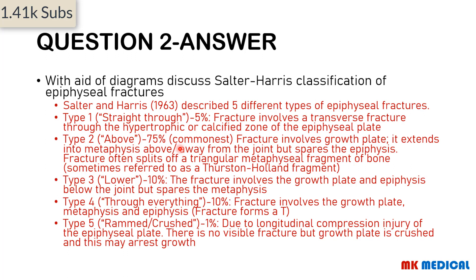This classification was first described in 1963 by Salter and Harris, who described four types, with a fifth type later added. We can use the word SALTER as a mnemonic: S for 'straight through' (Type 1), A for 'above' (Type 2, the commonest), L for 'lower' (Type 3), T-E for 'through everything' (Type 4), and R for 'rammed or crushed' (Type 5).